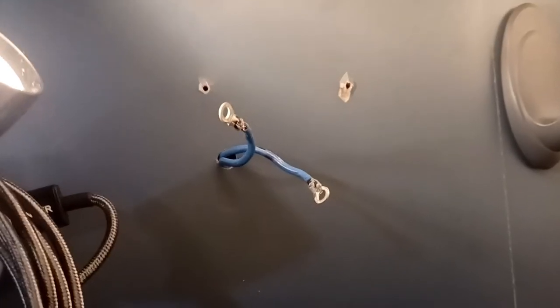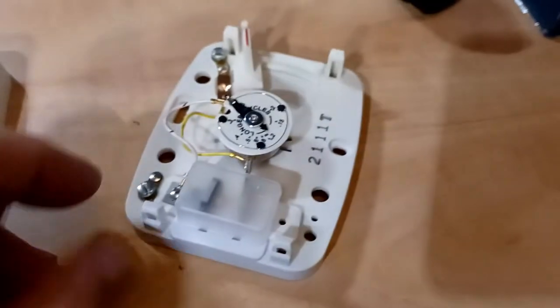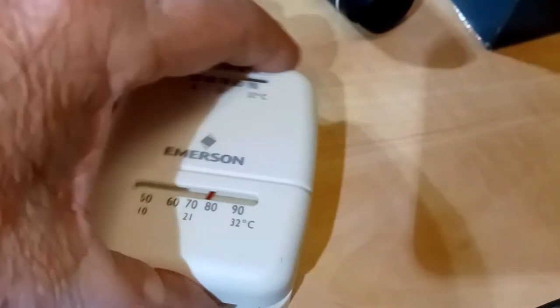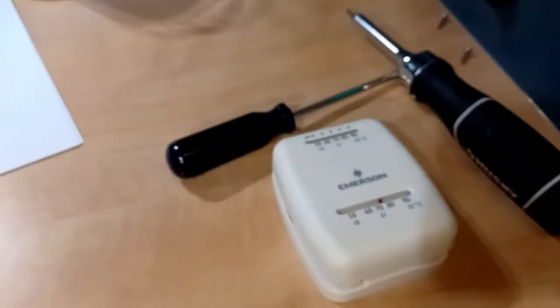We now have the thermostat removed. Here it is down here. You put everything back together, screws back in and put the plate on just so it's all together there and just set it aside.